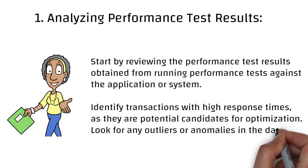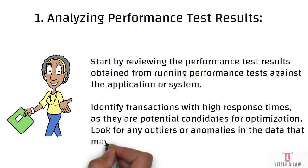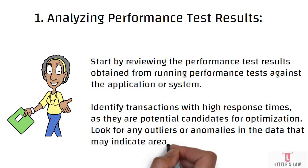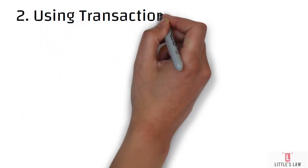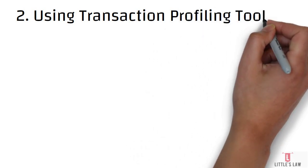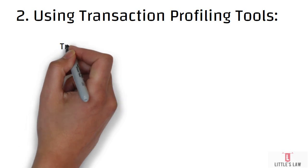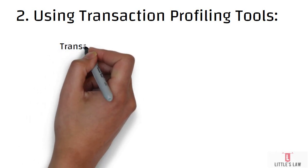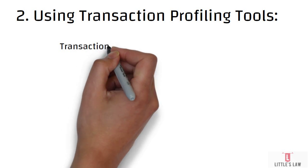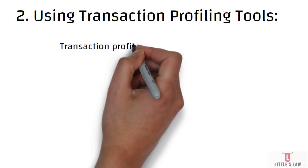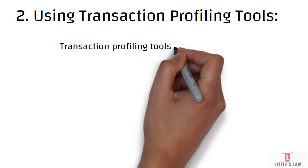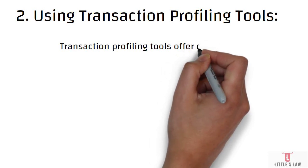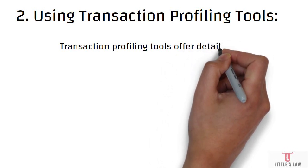Now let's move on to the second part — using a transaction profiling tool. I'm going to take you through the example of how to do this with New Relic. Transaction profiling tools offer detailed insights into the behavior of individual transactions within an application. These tools capture metrics such as execution time, CPU and memory usage, database queries, external API calls, and much more. Examples of transaction profiling tools include New Relic, AppDynamics, Dynatrace, and Visual Studio Profiler.